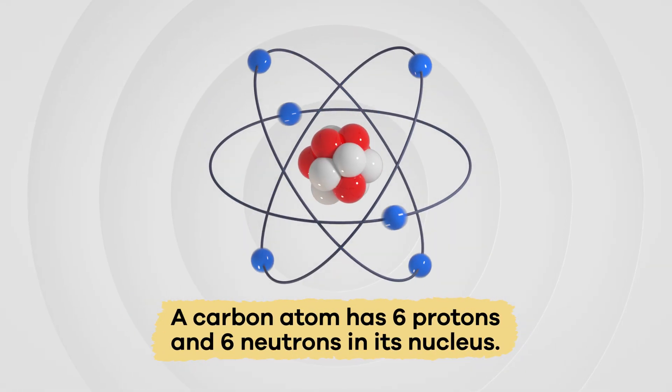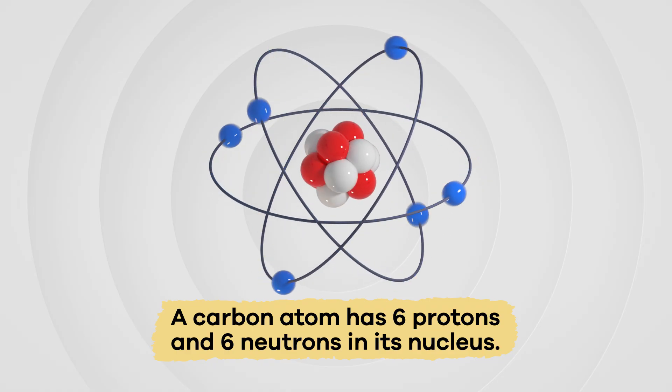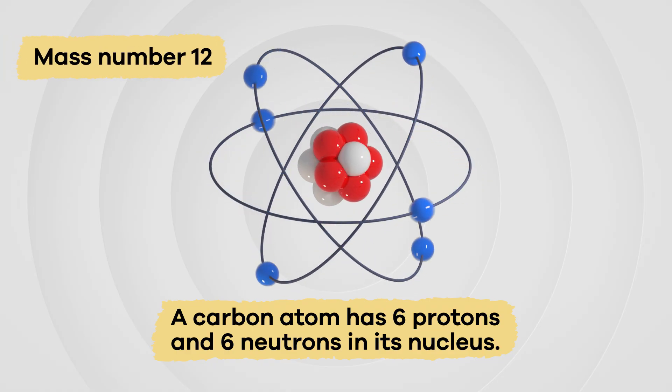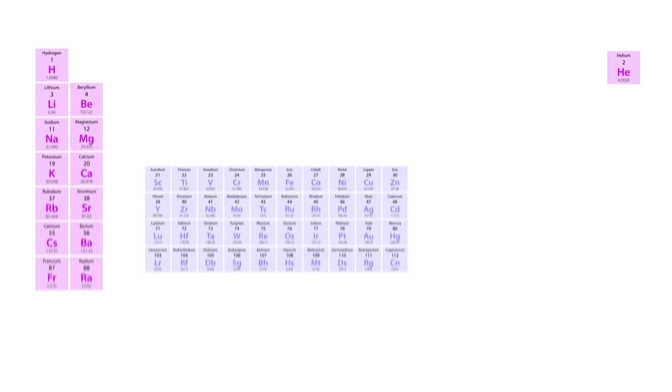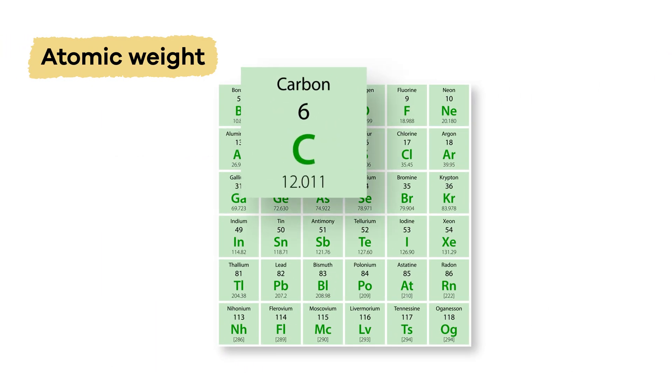For example, a carbon atom has six protons and six neutrons in its nucleus. This means carbon has a mass number of 12.